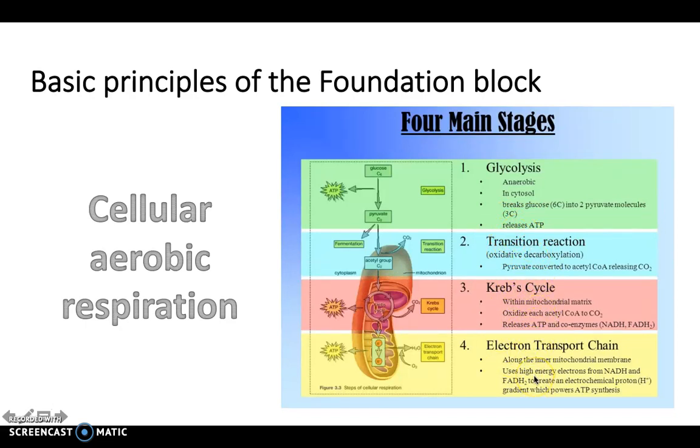And finally to the electron transport chain, which occurs along the inner mitochondrial membrane, and uses high-energy electrons from NADH and FADH to create an electrochemical proton gradient which powers ATP synthesis. So the overall aim of this is to produce ATP.